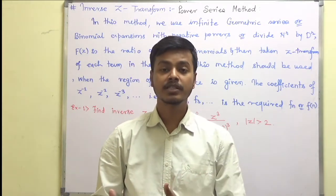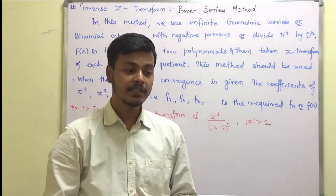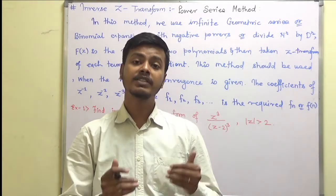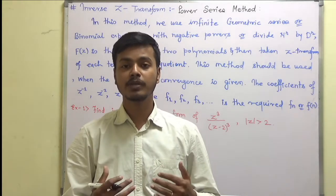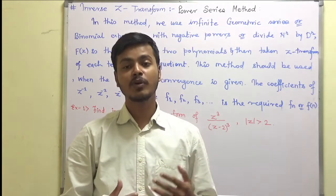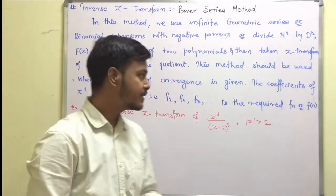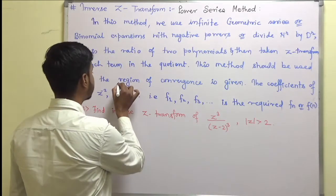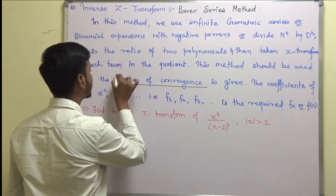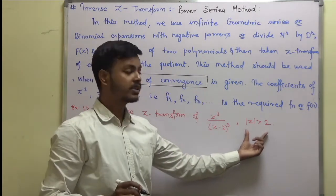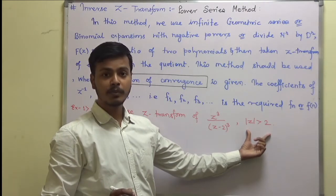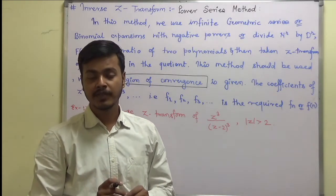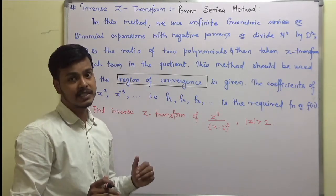Depending on the problem, we use the appropriate result — sometimes binomial expansion, sometimes division of numerator by denominator. A very important thing under this method is how to identify whether to solve a problem by the power series method, by convolution, or by the partial fraction method. The answer lies in the region of convergence. If the region of convergence appears explicitly in the problem, then it must be solved by the power series method only.